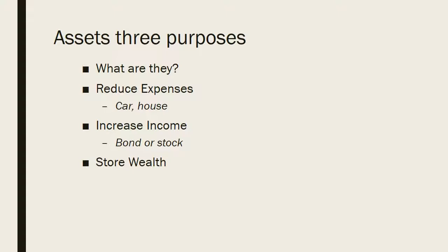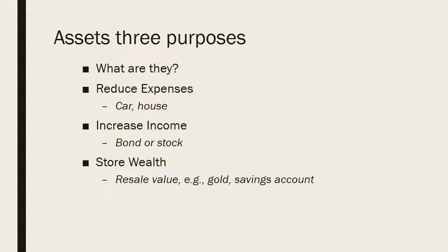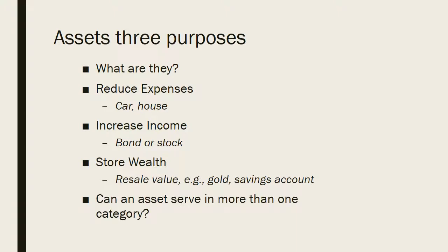The third purpose is to store wealth. The key thing to remember is that an asset should be something you can sell for a certain value. A savings account can store wealth, assuming relatively low inflation. Gold could, as well as bonds, stocks, et cetera. A car is not a great use of storing wealth since cars are worth less over time. An asset can serve in more than one category, but it doesn't have to — some assets serve in one category, some in two, and some potentially in all three.